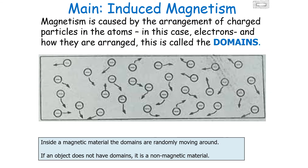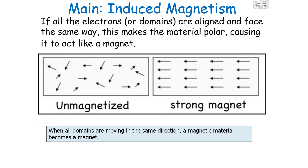Magnetism is caused by the arrangement of charged particles in atoms — in this case electrons — and how they're arranged, which we call domains. Inside a magnetic material, the domains are randomly moving around, as shown in this diagram. If an object doesn't have any domains at all, it's a non-magnetic material. If all of the domains are aligned and facing the same direction, this makes the material polar, causing it to act like a magnet with a north pole and a south pole.